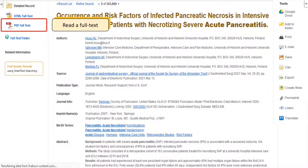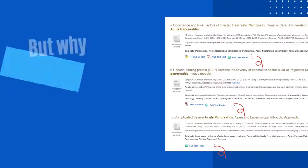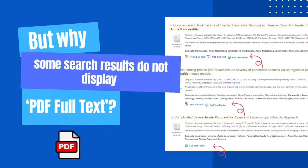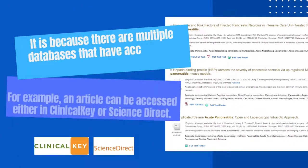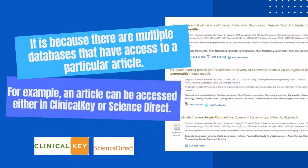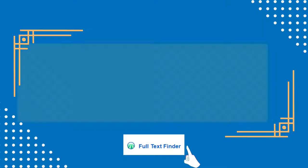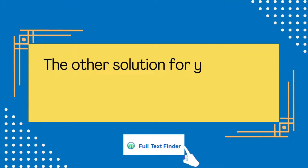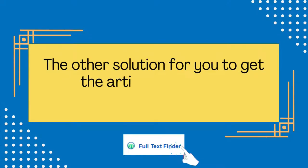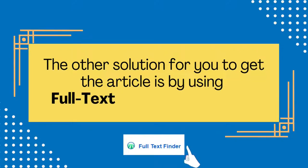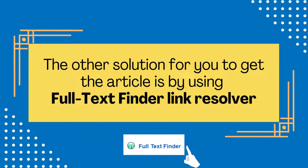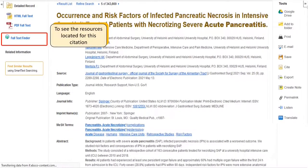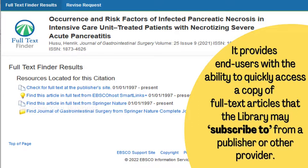Select an article to read by clicking on the PDF full text. You may also click Full Text Finder, which is the way to find out where the full text is located.